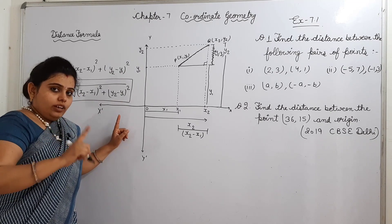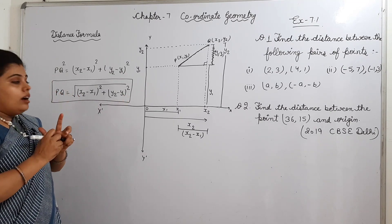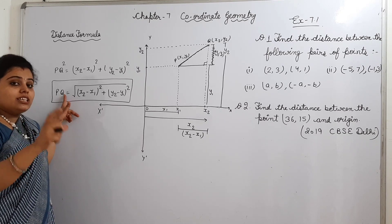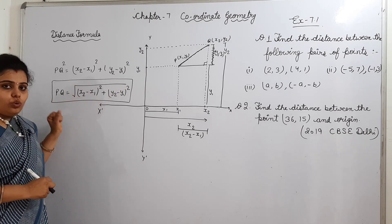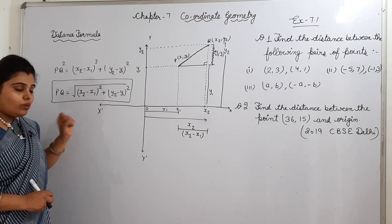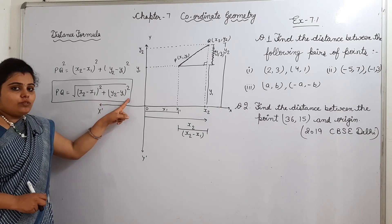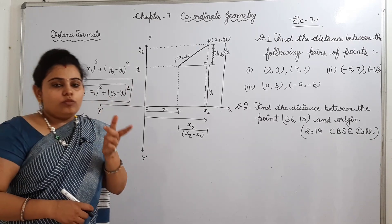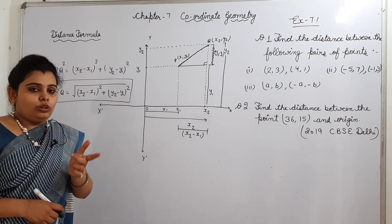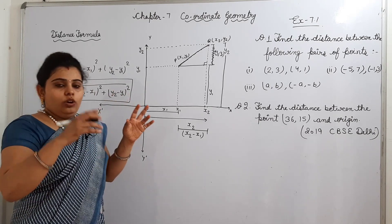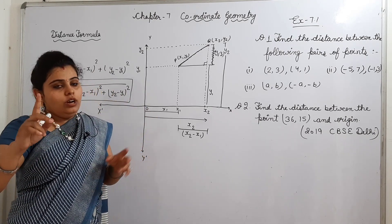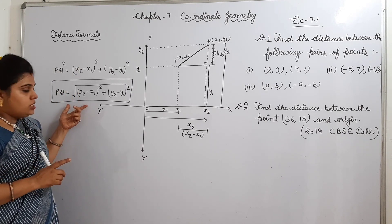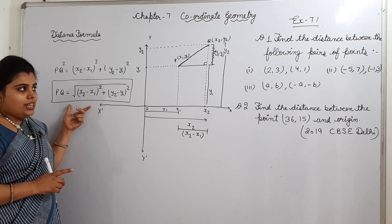No need to do the derivation. You have to learn only the formula. I am repeating the formula again: the distance between two points equals √[(X2 − X1)² + (Y2 − Y1)²]. Don't confuse between X1, Y1 and X2, Y2 - you can take any of the two points as X1, Y1 or X2, Y2. Now we will do some questions using this distance formula.